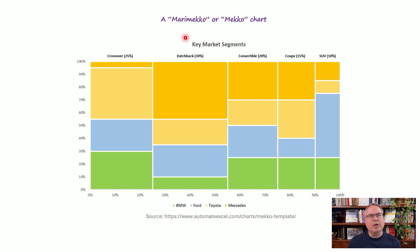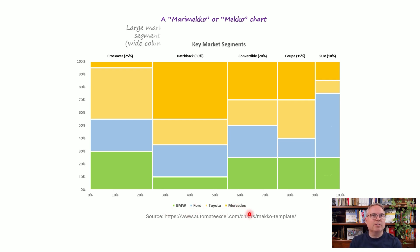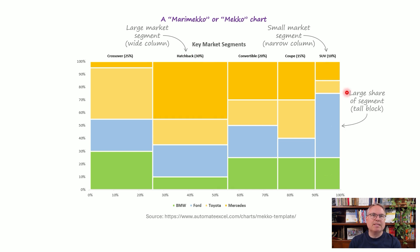Here we are basically looking at the market breakdown of a vehicle market with different types or segments of vehicles, and also by brand. Based on this Marimekko chart, we can see which segments or types of vehicles have large or narrow market shares — they're wide or narrow columns. And also within each segment, we can see which brands had a lot of that segment, or a relatively small amount of that segment.